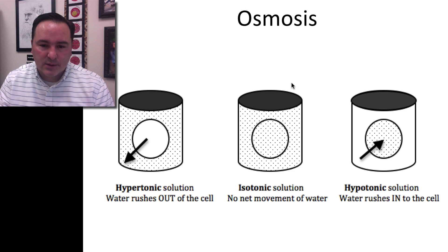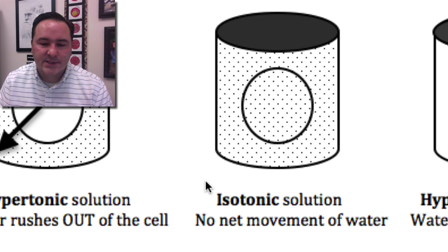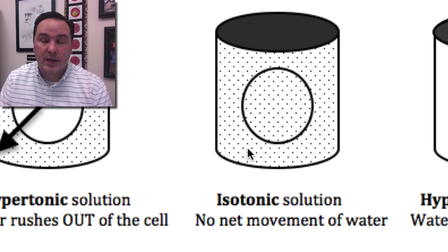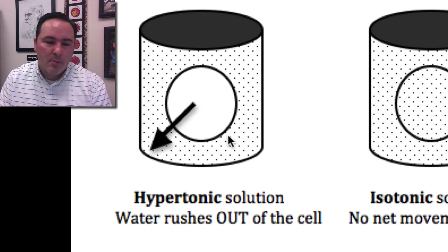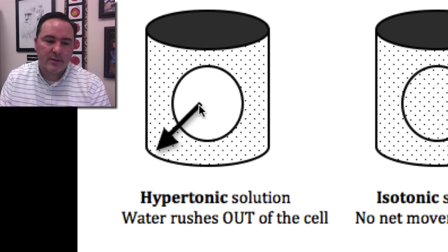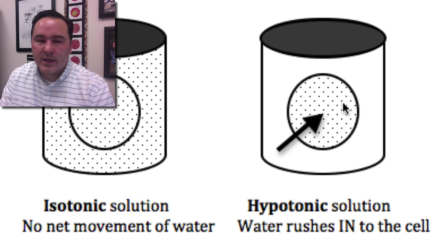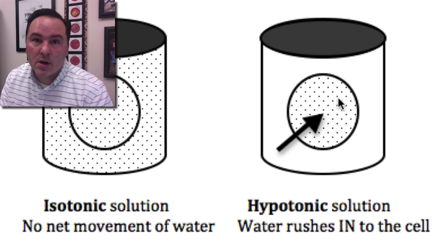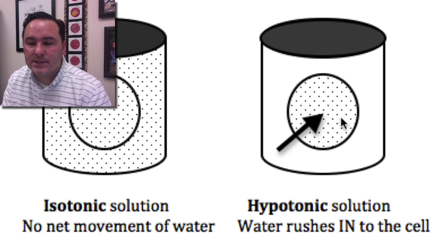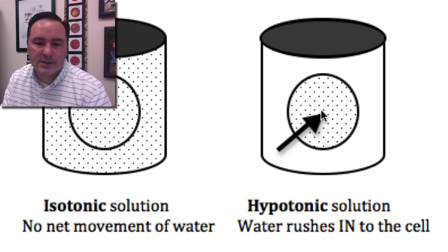Let's look at the middle situation — this is called an isotonic solution, where the concentration of particles on the outside of the membrane is equal to the concentration of particles on the inside of the membrane. So there's no net movement of water. But if the concentration is higher on the outside of the membrane, water will go out of the cell. And if the solution is hypotonic, that means there are more solutes on the inside of the cellular membrane, and so water will rush into the cell.